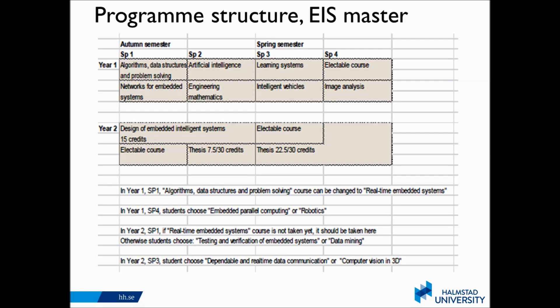First we'll talk about the Embedded Intelligence Systems Master Program. In year one, you will take some core courses in computer science, an algorithms course, and also mathematics and engineering math. You will also take courses in three different areas: embedded systems, intelligence systems, and integration and applications. In the second year, there's a larger course called Design of Embedded Intelligence Systems, where you're going to do a lot of practical work with a robot. The thesis will also start then, which should be very exciting.